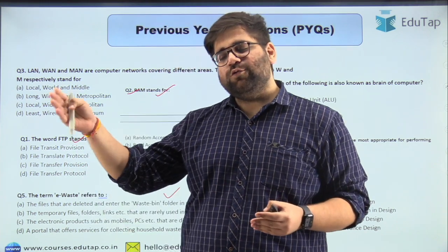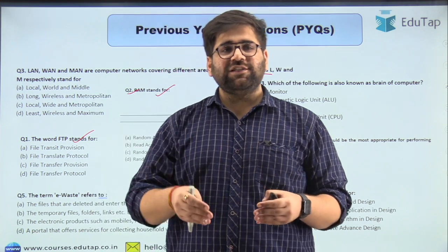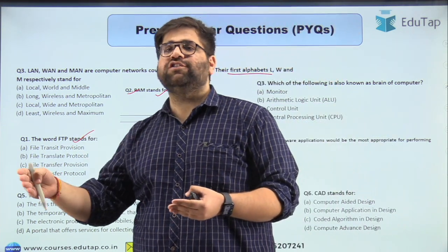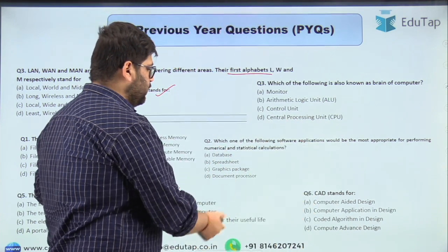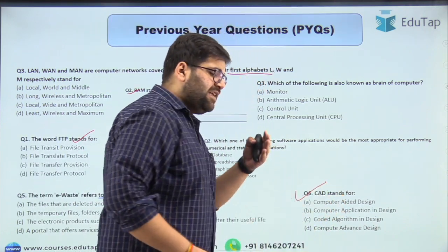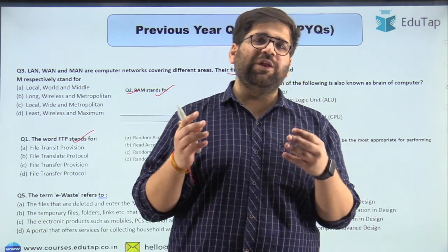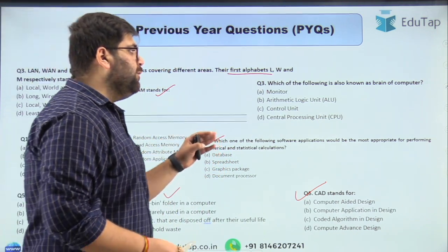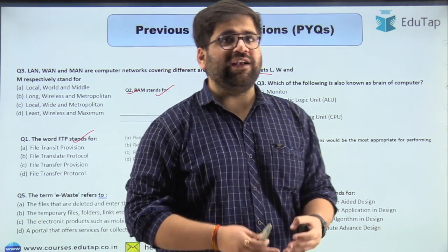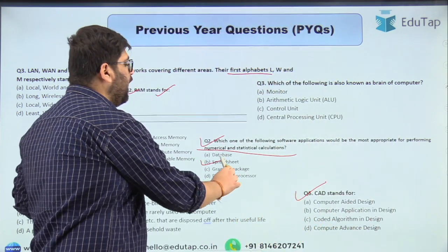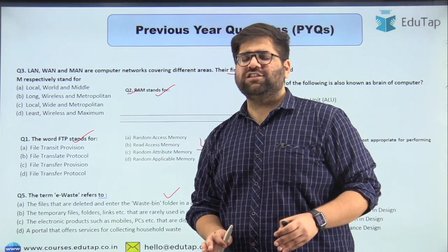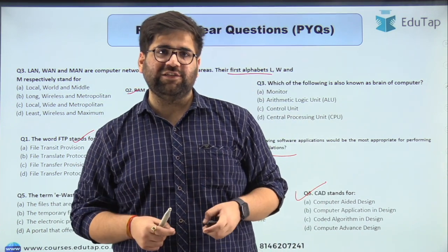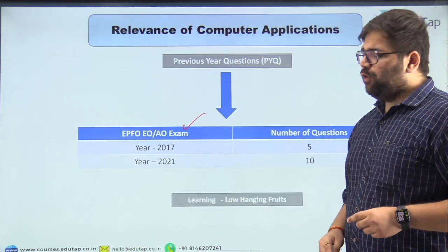When you see different components of APFC and EO questions, some questions are time-consuming but these are time-saving. In easy questions you save time, and in hard questions you invest time. Similarly, in 2015 questions, again basic full forms like FTP, ROM, RAM are asked. Also, which software application is most appropriate for numerical and statistical calculations — we all know Microsoft Excel — the answer is spreadsheet. Easy level questions; all you need is just basic knowledge.